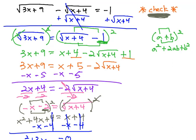In part 1 of this video, we took the equation the square root of 3x plus 9 minus the square root of x plus 4 equals negative 1,